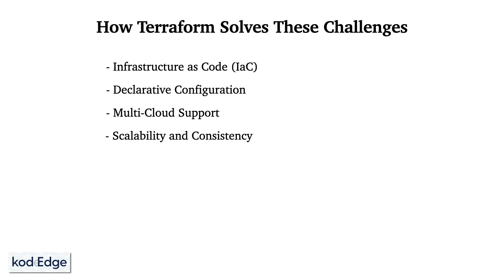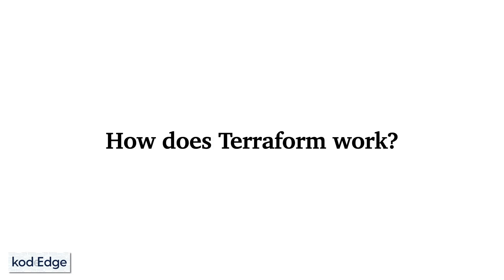Next is scalability and consistency — Terraform's state management, resource graph, and execution plan ensure consistent and scalable infrastructure provisioning. Next is tracked infrastructure — Terraform generates a plan and prompts you for approval before modifying your infrastructure. And last is collaboration — since configurations are written in files, they can be version controlled using a version control system, which can be efficiently managed across a team. Now let's understand how Terraform works.